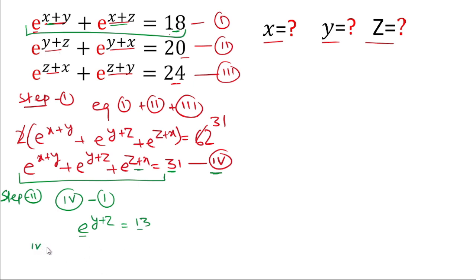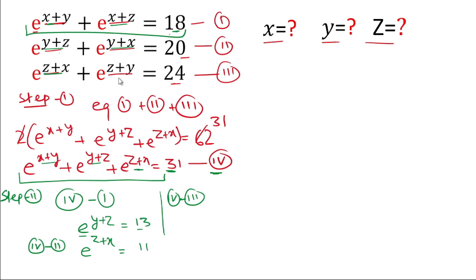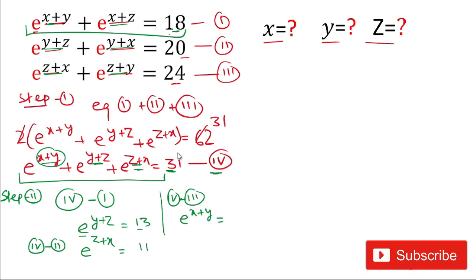Similarly, subtracting equation 2 from equation 4: e^(y+z) and e^(y+x) cancel, leaving e^(z+x) = 31 − 20 = 11. Next, subtracting equation 3 from equation 4: e^(z+x) and e^(z+y) cancel, leaving e^(x+y) = 31 − 24 = 7. Wait — that is 31 − 24 = 7, but the speaker says 9. So e^(x+y) = 9.